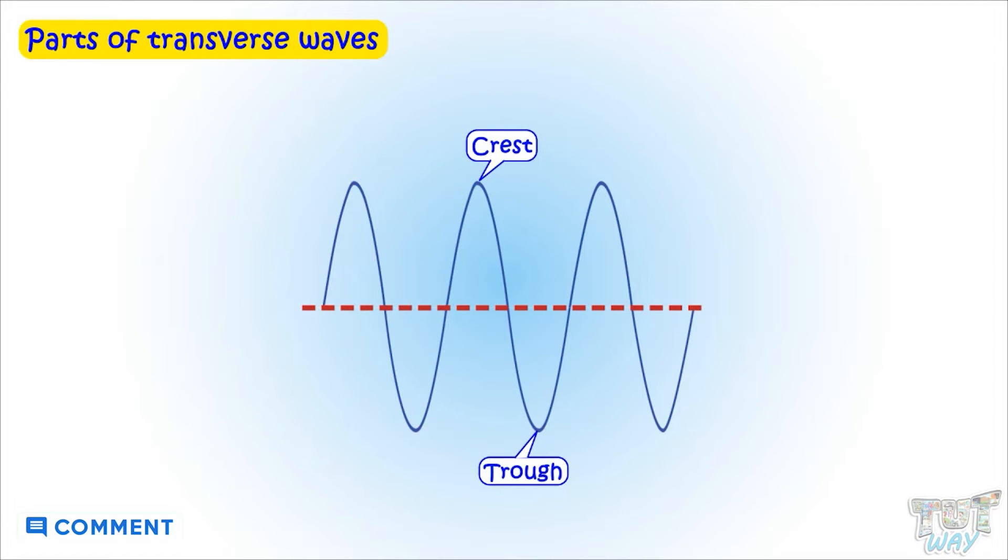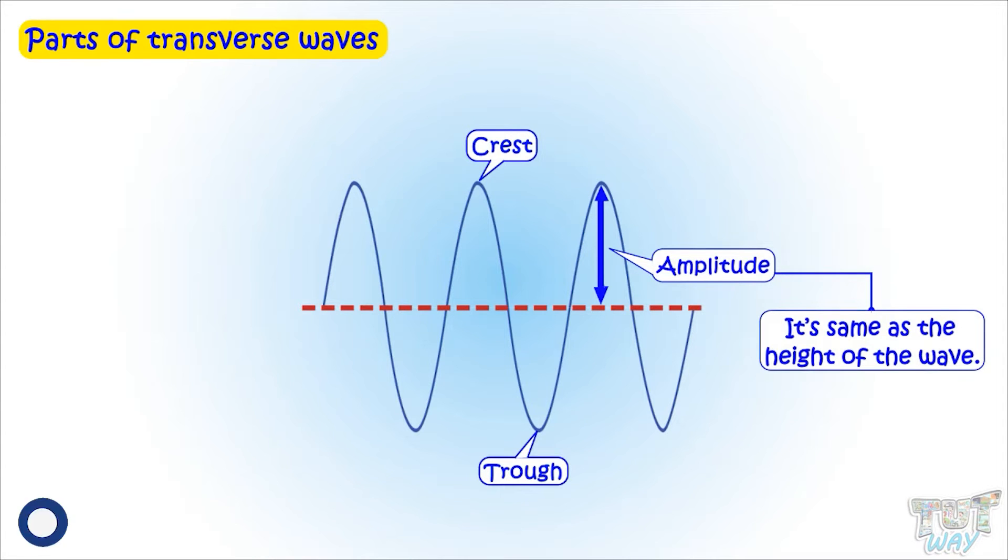Next is the amplitude of a transverse wave. It is the same as the height of the wave. And in order to measure height of the wave, we measure the length from the resting line to the top of the crest, or another way is to measure the distance between the resting line to the bottom of the trough. Both are correct.